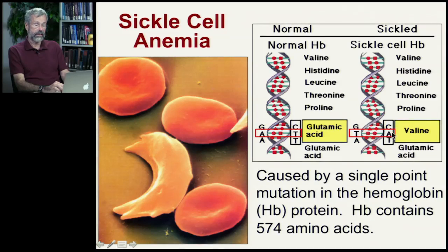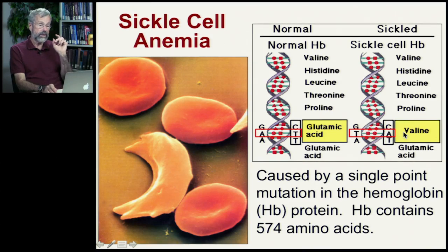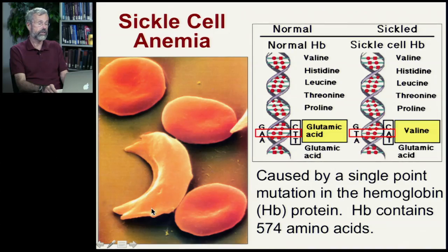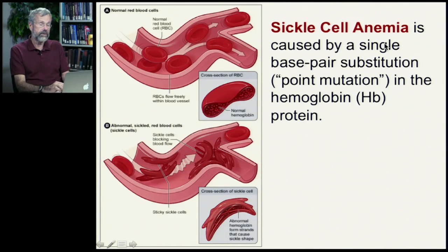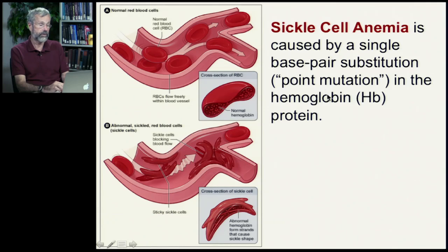That mutation makes valine instead of glutamic acid. And that one point mutation has the consequence of producing a very different shaped red blood cell. So sickle cell anemia is caused by a single base pair substitution — a point mutation — in the hemoglobin protein.